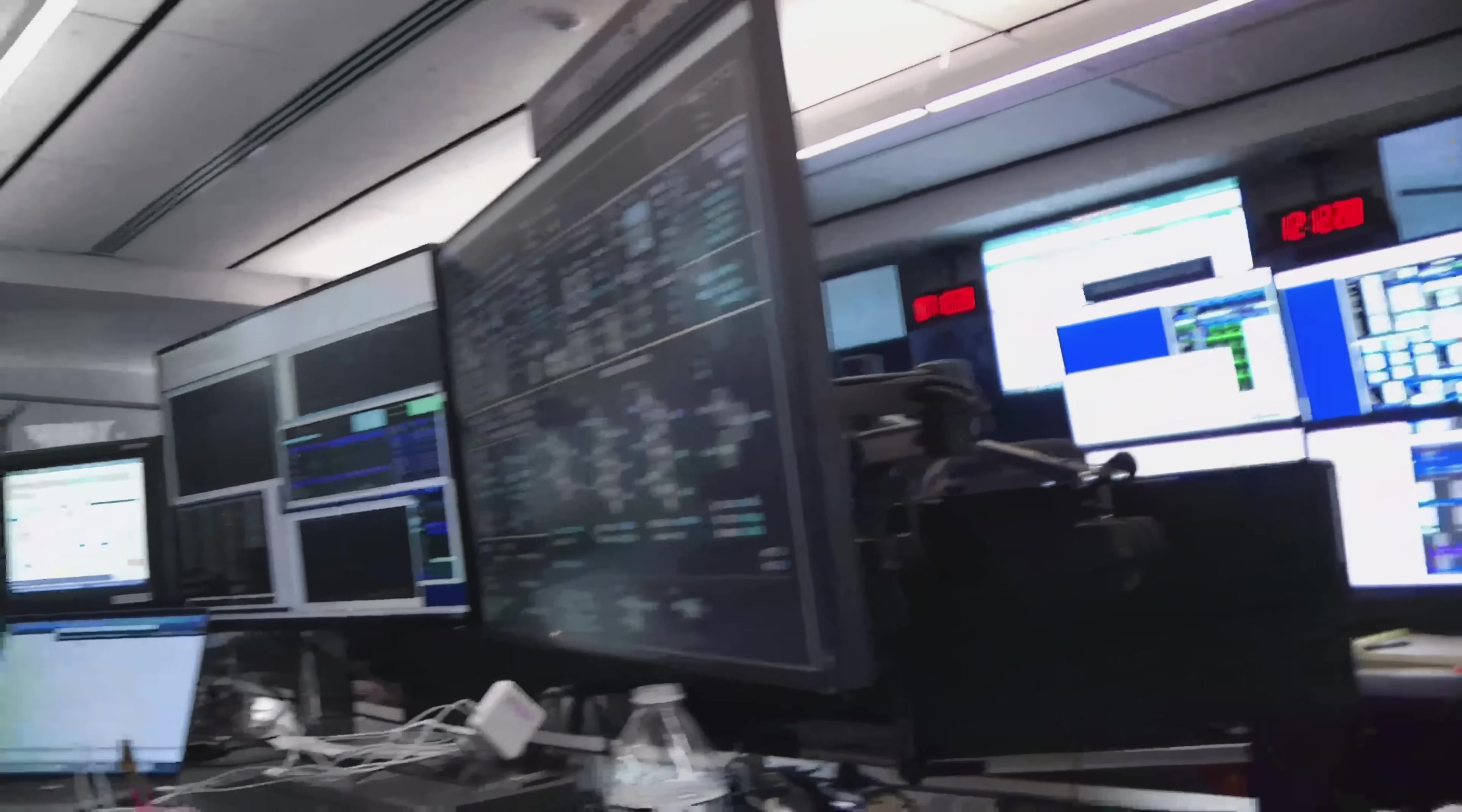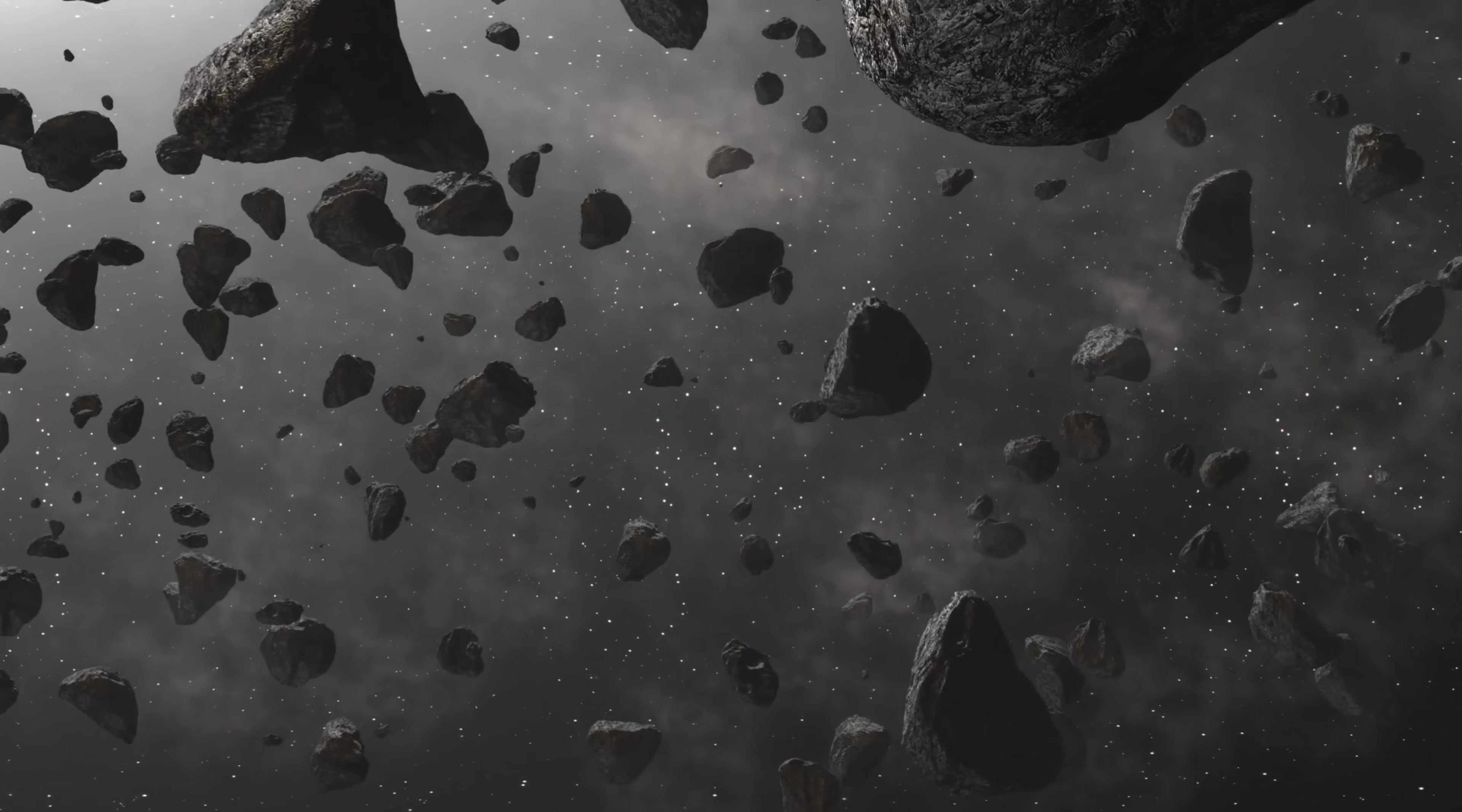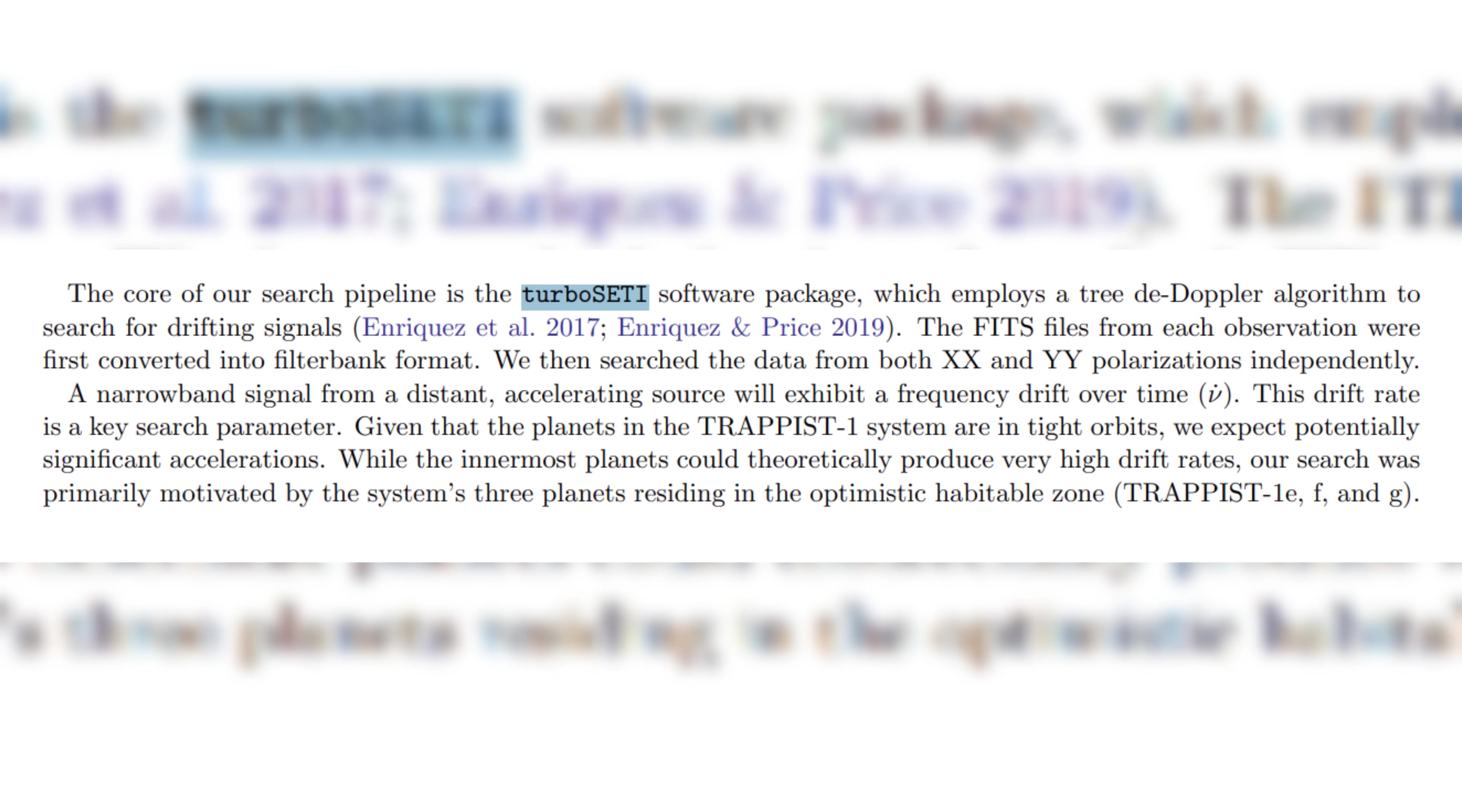Processing this immense dataset required the use of the Turbo-SETI pipeline, a sophisticated software suite designed to hunt for narrowband signals. In the chaotic cacophony of the cosmos, nature is a broadband broadcaster. Quasars, pulsars, and gas clouds emit radio waves that are smeared across wide frequency ranges. Intelligence, by contrast, is efficient. An artificial transmitter compresses energy into a tight, narrow frequency to maximize range and clarity. The Turbo-SETI algorithms combed through the 1 to 12 gigahertz data, looking for these telltale spikes of concentrated energy.